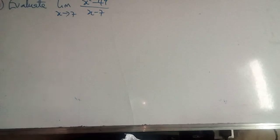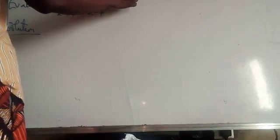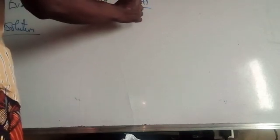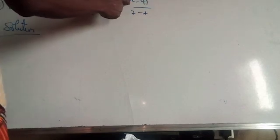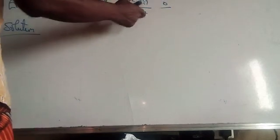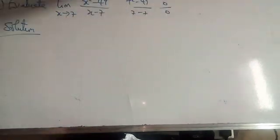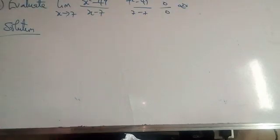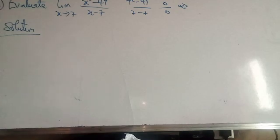Now, if we apply x equals 7 directly, we end up with 7 squared minus 49, all over 7 minus 7. That is 49 minus 49 = 0 in the numerator, and 7 minus 7 = 0 in the denominator. You can see it has given us an undefined value. Whereas, if we carry out some algebraic operations, the result we obtain will not be undefined.